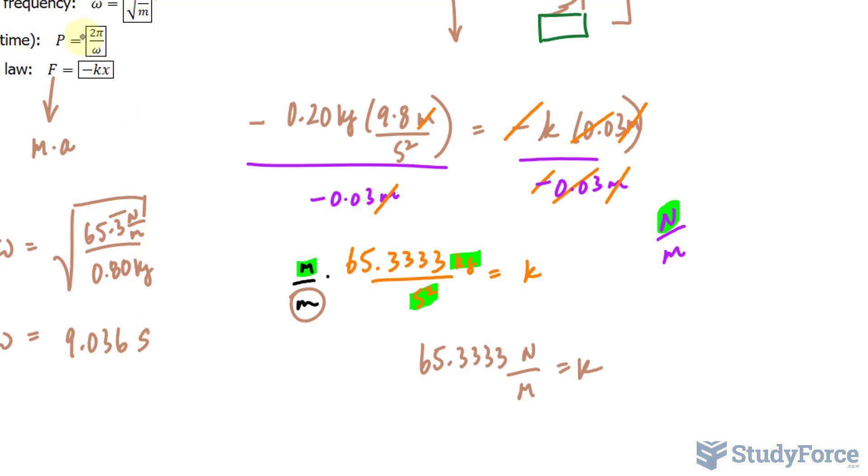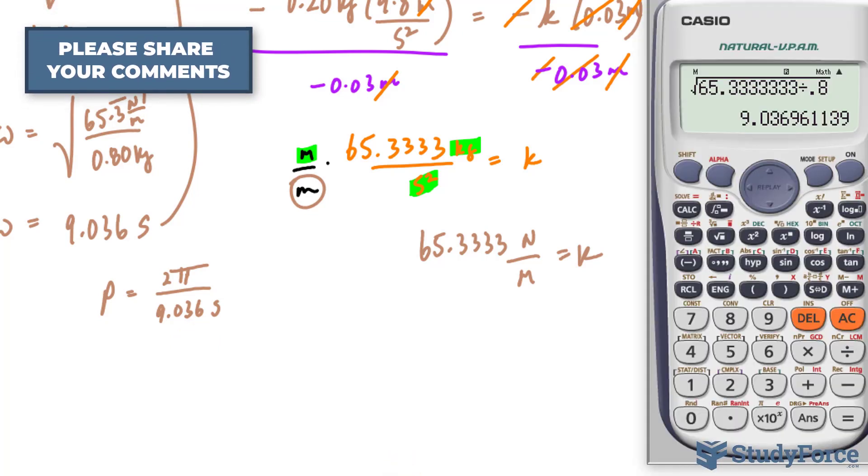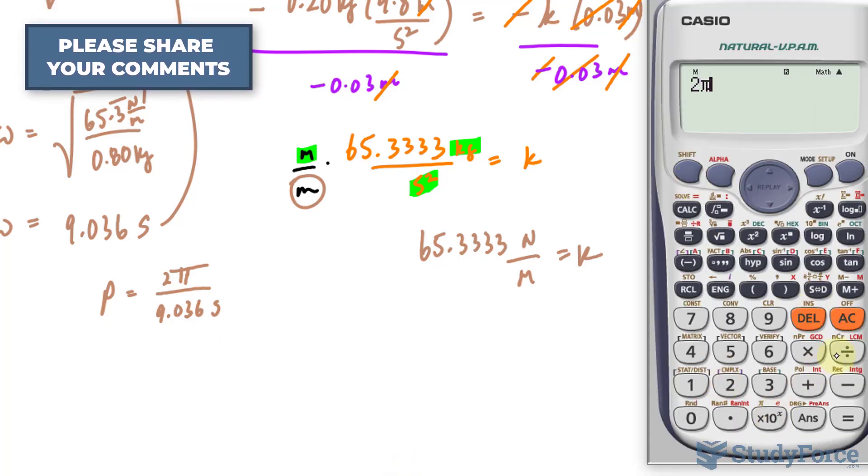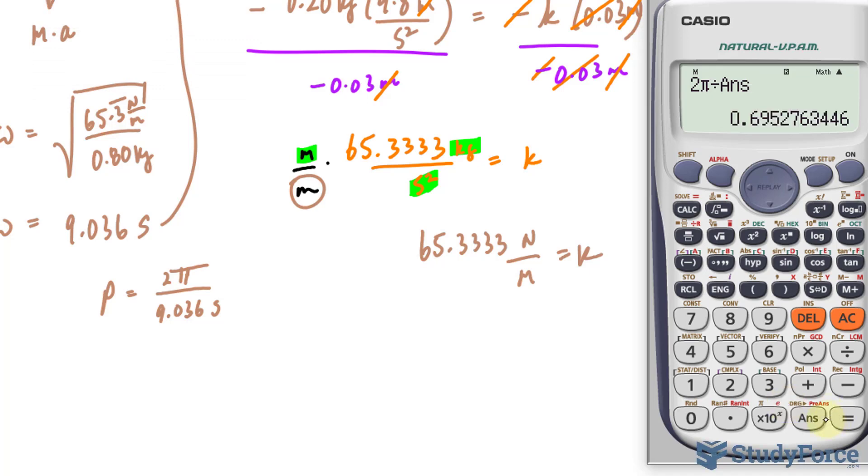Lastly, we'll take this value and put it into this formula where I have period is equal to 2 pi over 9.036 seconds, and technically it's 2 pi radians, but we don't write radians. So 2 times pi divided by the answer that we just got previously, and that's 0.69527.